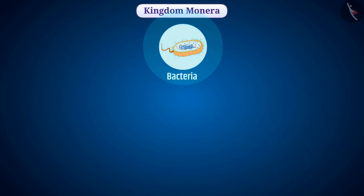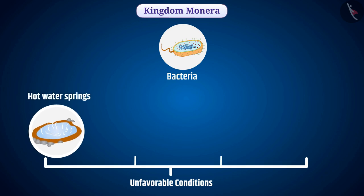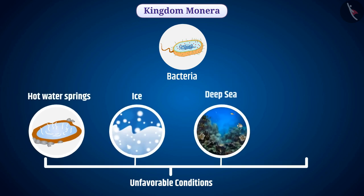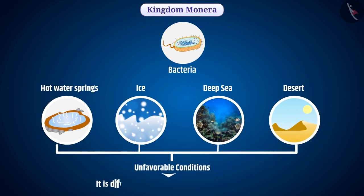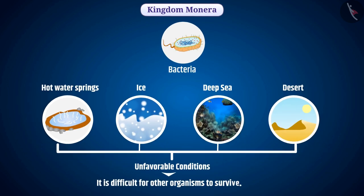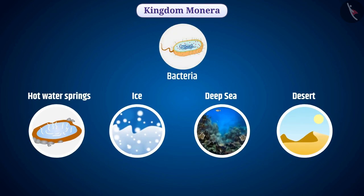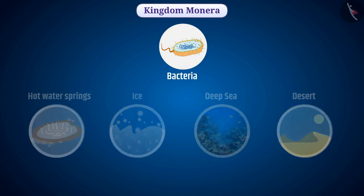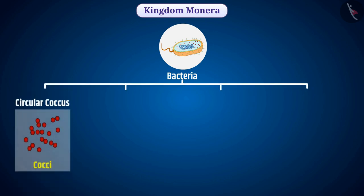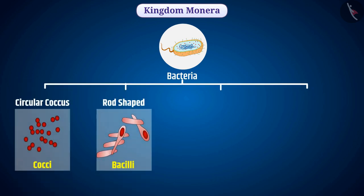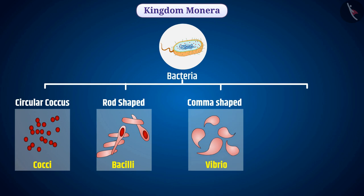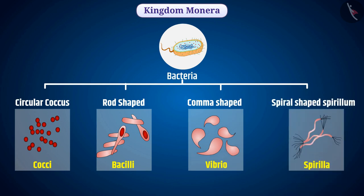Bacteria are found in almost all places. They are also found in extreme and unfavorable conditions such as hot water springs, ice, deep sea and desert, where it is difficult for other organisms to survive. These can be classified into four groups based on their shape: Coccus (circular), rod-shaped Bacilli, comma-shaped Vibrio, and spiral-shaped Spirillum.